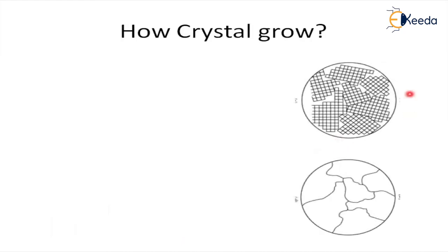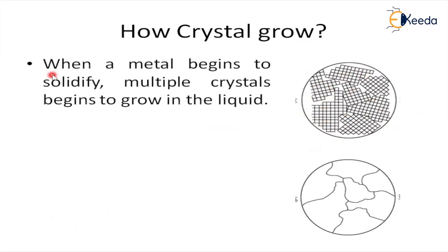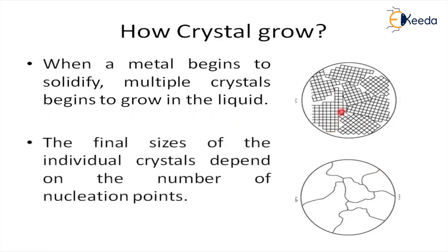You can observe in the continuation images how crystals grow: in earlier images they are about to bond, and then they bond completely. When the metal begins to solidify, multiple crystals form in the liquid. The final size of each individual crystal depends on the number of nucleation points — if the number of nucleation points increases, the size of individual crystals will increase.